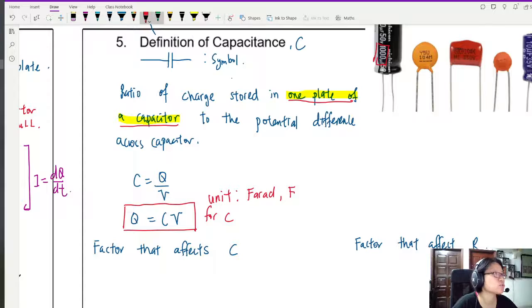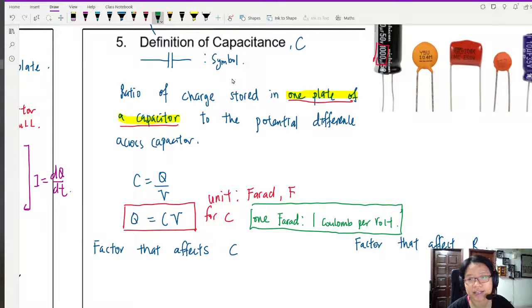And if in case they ask you to define one farad, one F. This will be, so basically it's the same thing. If you want to define one F, you will put Q as one and V as one. So this will be one coulomb per volt. That will be the definition of one farad. So when you think about farad, it's basically saying that if I have one farad capacitor, by the way, a one farad capacitor is a very, very big capacitor.